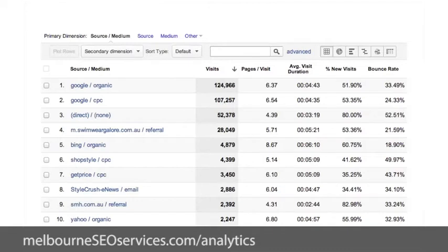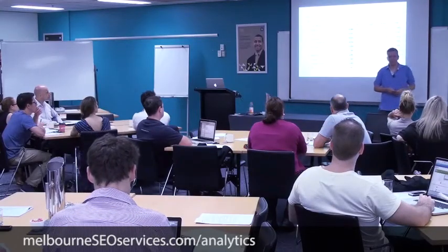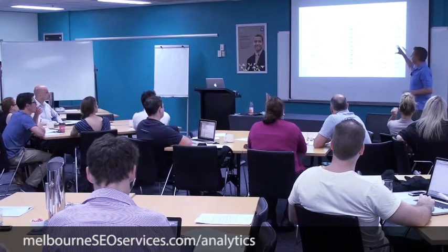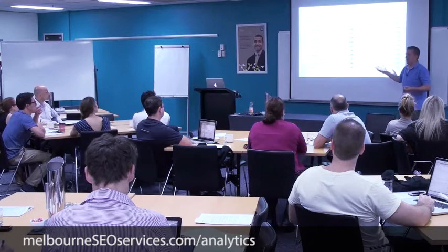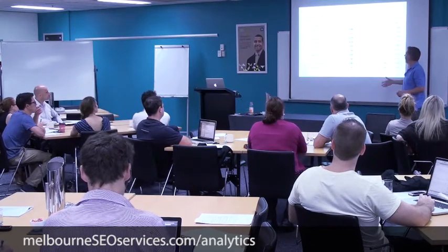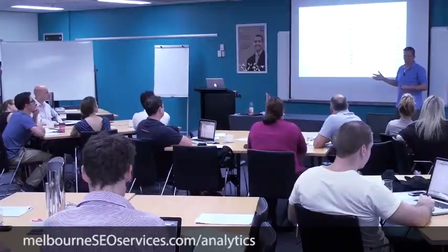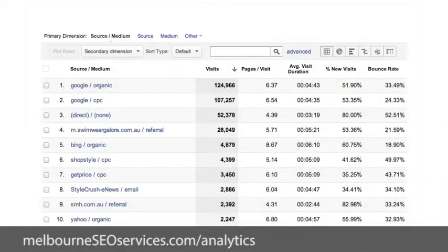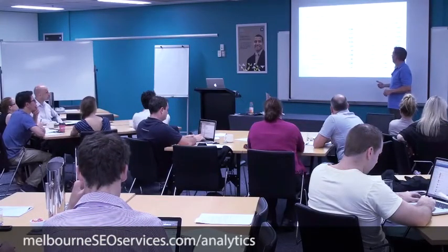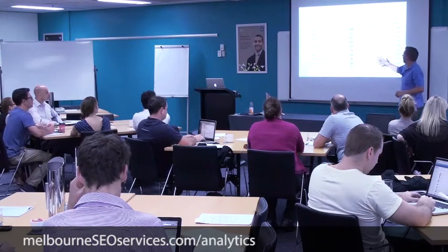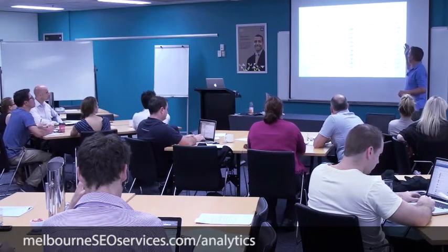You're going to get a table that looks much like that. What am I looking for? At a top level, I want to know how many visits, how many pages they visit each time — it's not a great metric on its own, but it gives me a comparison across different traffic sources — how long they're hanging around on the site, how many are new visitors, and how many bounce straight off.